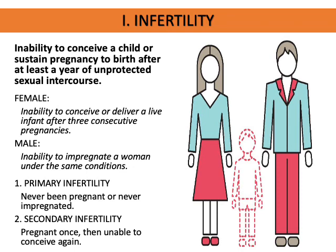Infertility is the inability to conceive a child or sustain pregnancy to birth after at least a year of unprotected sexual intercourse. A couple is not yet diagnosed as infertile until after one year of unprotected sexual intercourse. Because most couples have the potential to conceive but are less able to do so without additional help, the term sub-fertility is more often used today.